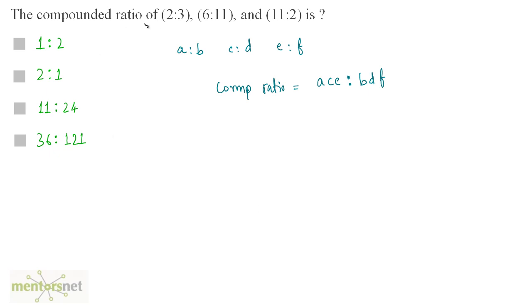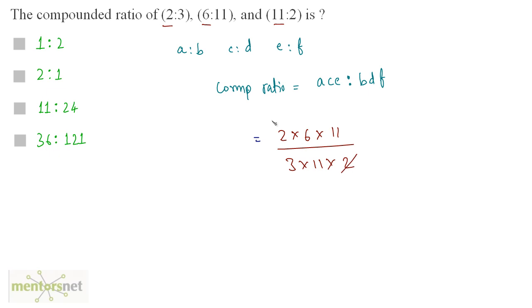Applying this: the compounded ratio of 2 is to 3, 6 is to 11, and 11 is to 2 equals 2 times 6 times 11 divided by 3 times 11 times 2. The 2 cancels out and the 11 cancels out, leaving 6 divided by 3, which is 2 by 1. So the compounded ratio is 2 is to 1. The answer is option B.